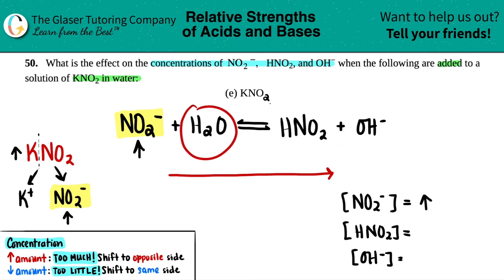And basically, if the H2O was an aqueous and not a liquid, this would drop. But since I'm going from left to right, HNO2 would increase and so would OH minus. They're on the same side. So HNO2 would increase and so would the OH minus. And that's it. This is your final answer.